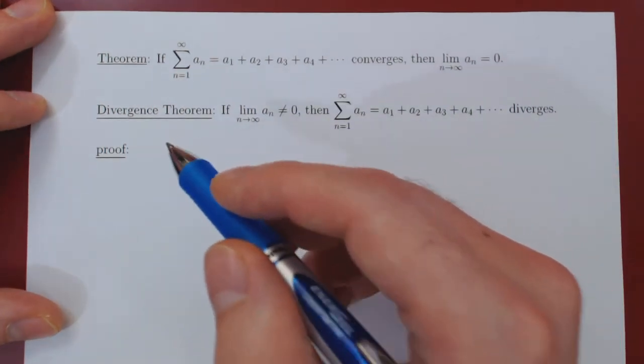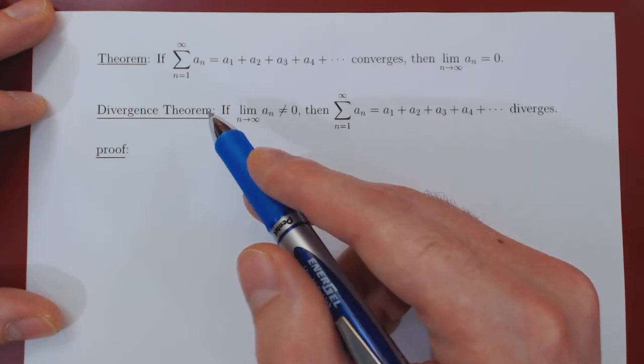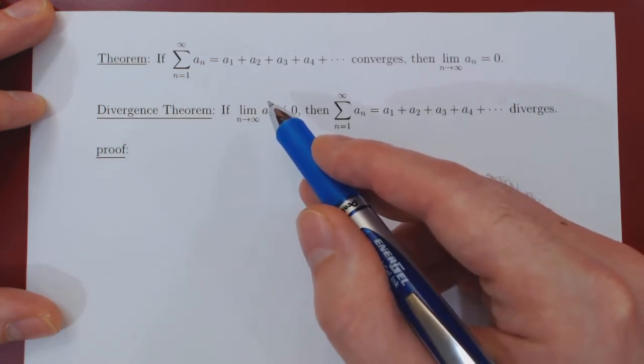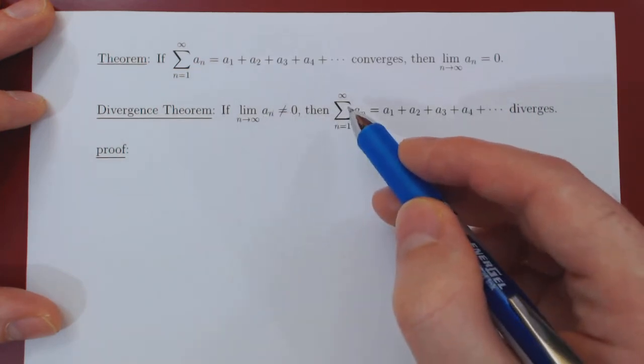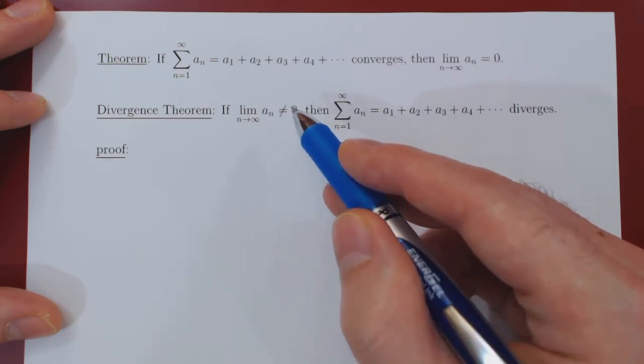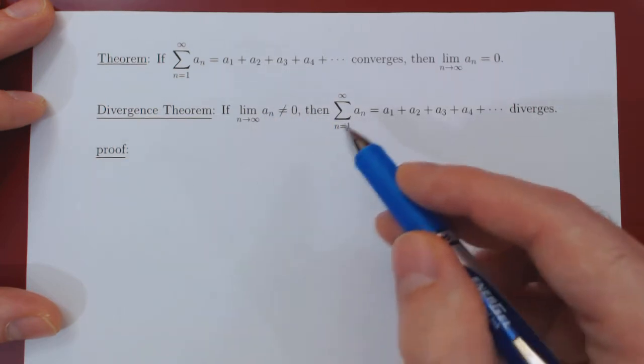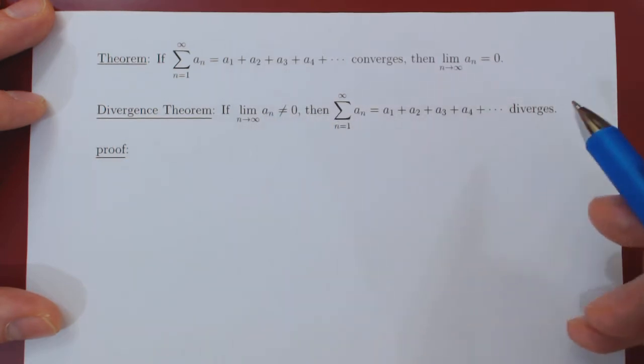Okay, so in this video we will prove the divergence theorem, which states simply that if the individual terms of our series do not converge to zero as n tends to infinity, then the series simply diverges.